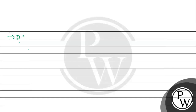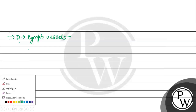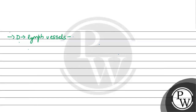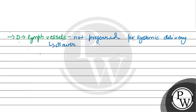Option D is lymph vessels. In the case of lymph vessels, lymphatic injections are not preferred for systemic delivery. They are not preferred for systemic delivery of medicines, and their absorption is also very slow.